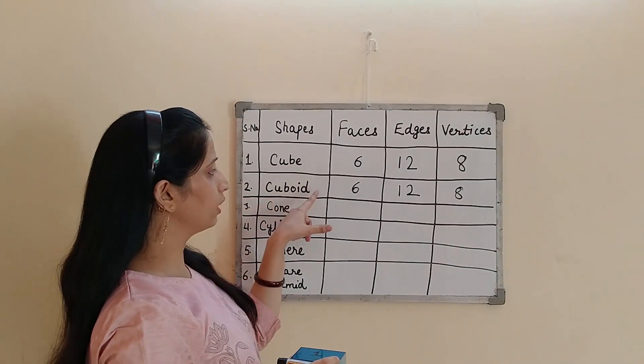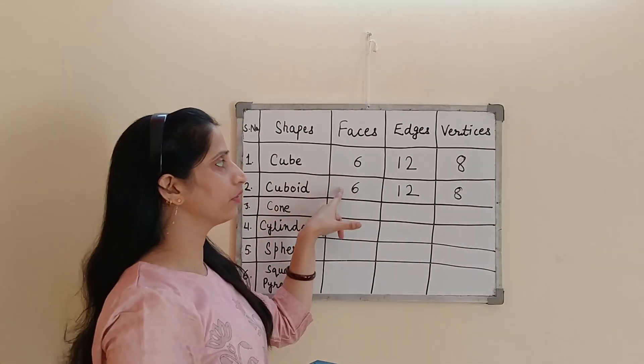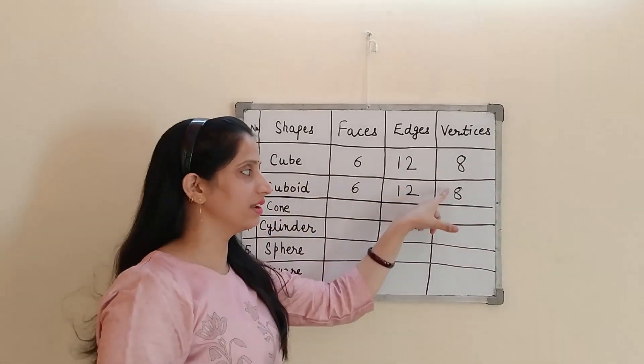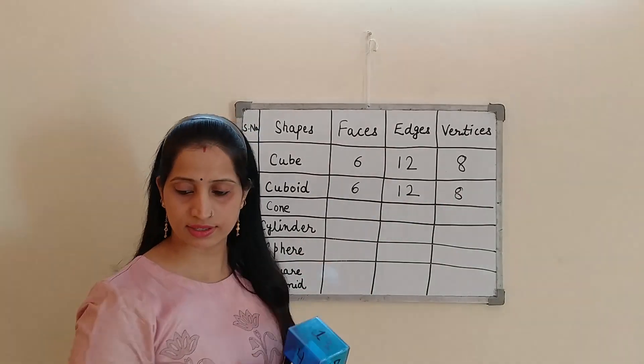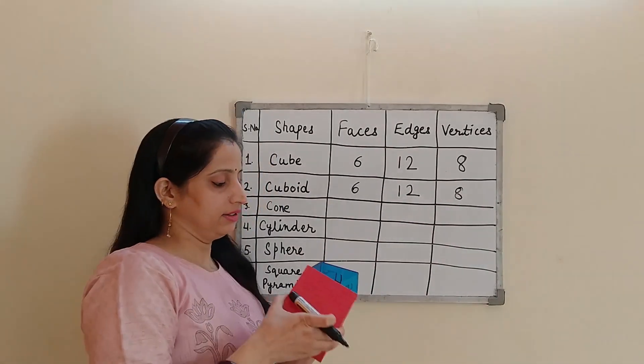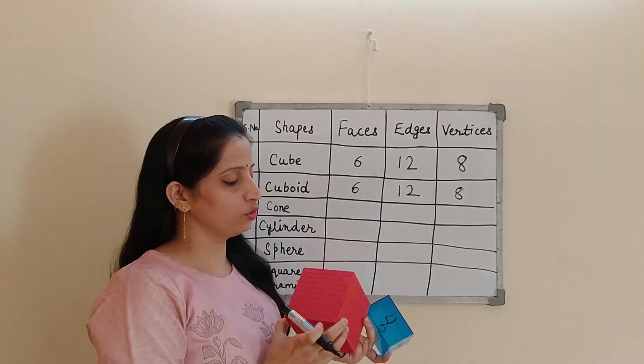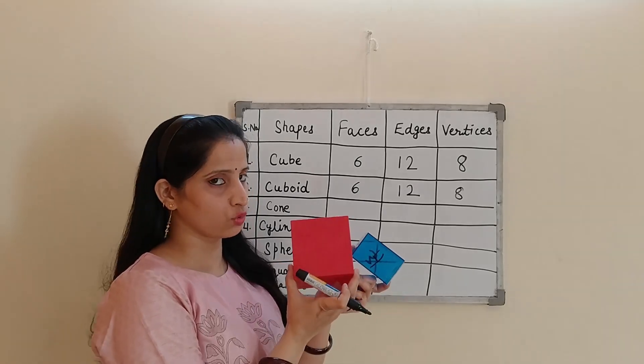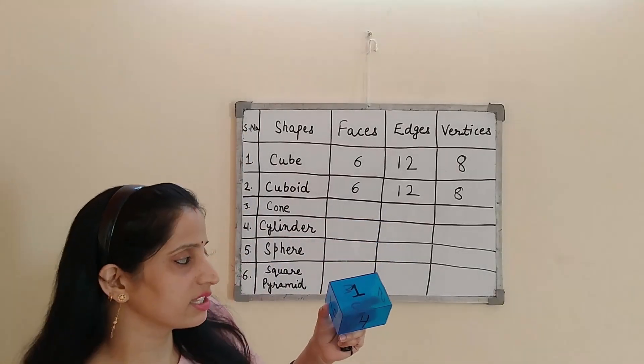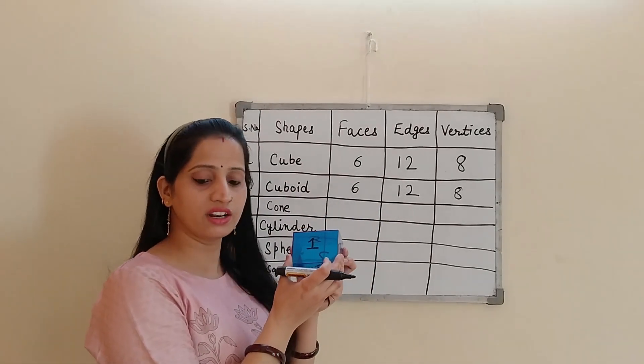So you can see that cube and cuboid are having equal number of faces, edges, and vertices. The only difference is that the cube is having the faces which are square in shape and the cuboid is having the faces which are rectangular in shape.